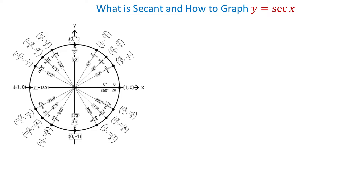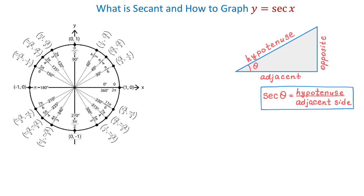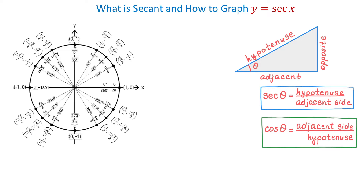In this video, we will talk about the secant function and how to graph y equals secant of x. In a right triangle, secant of angle theta equals the hypotenuse divided by the adjacent side. The secant function is the reciprocal of the cosine function because cosine of theta is the adjacent side divided by the hypotenuse, while secant is the hypotenuse divided by the adjacent side.